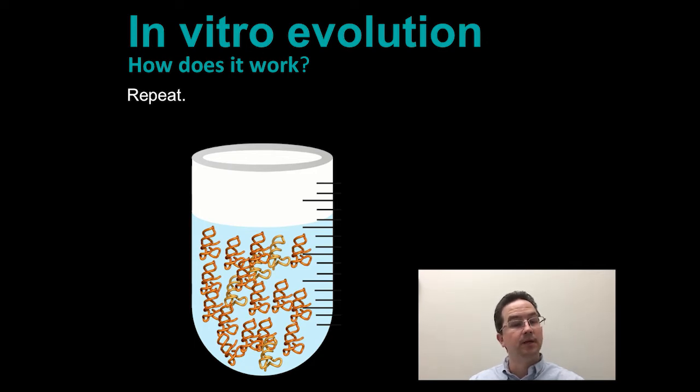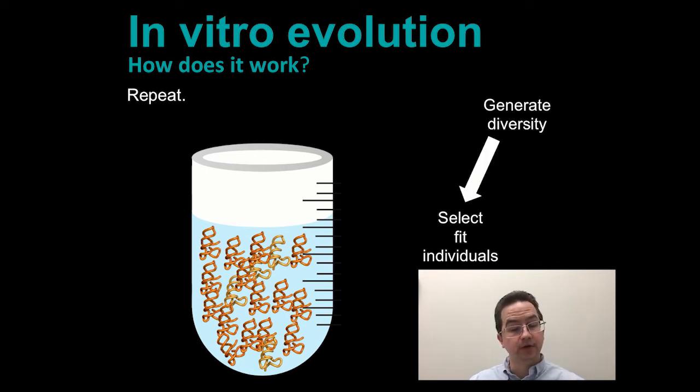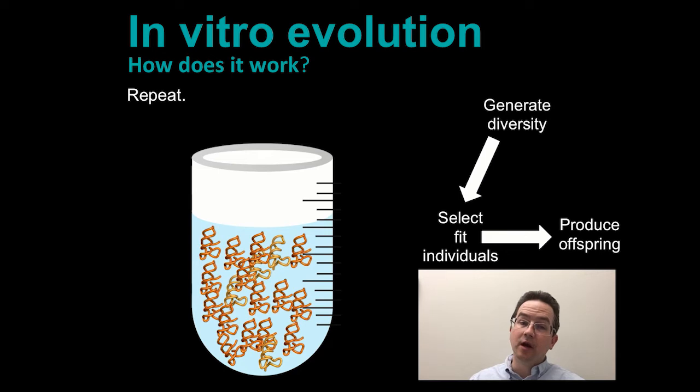So, just to summarize, we are generating diversity, we are then selecting fit individuals that have a certain function, then we are making copies of the fit molecules, which is essentially generating offspring.